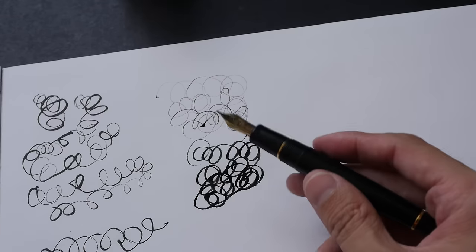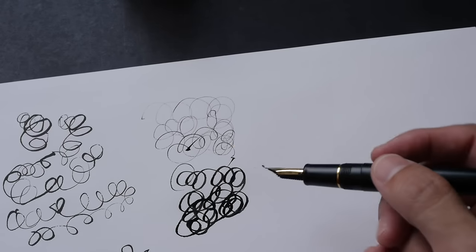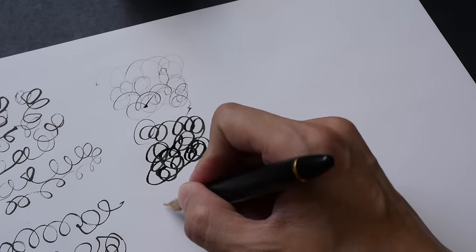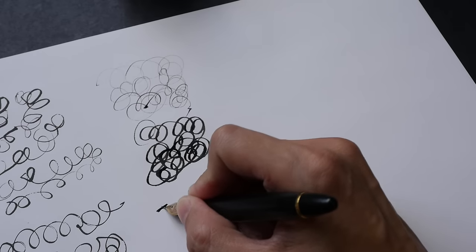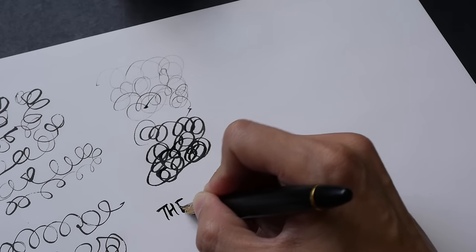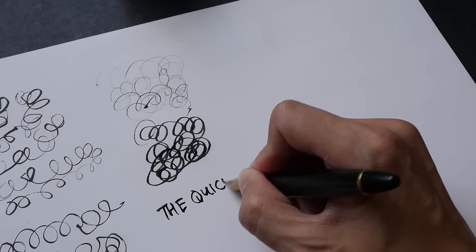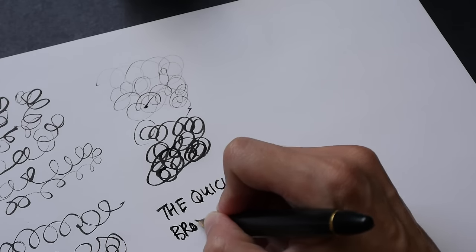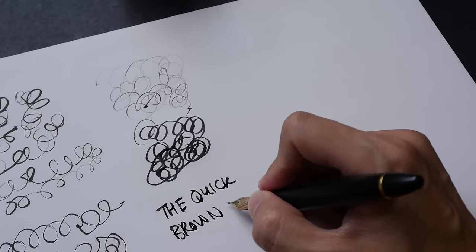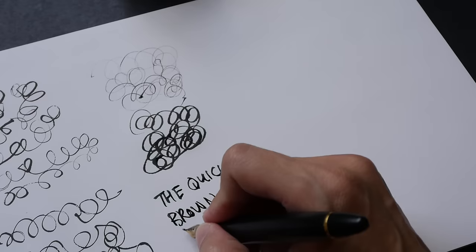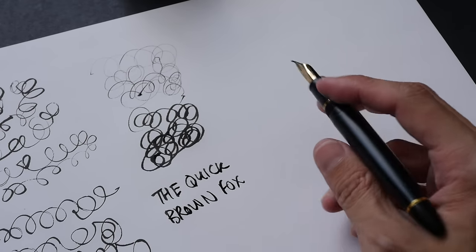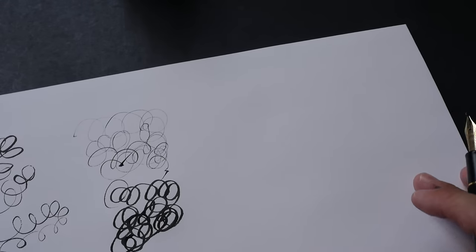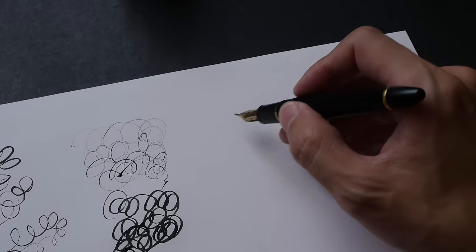And this is something that the music nib cannot do, so that's one of the main differences. As for writing, let's see - I think for writing it's pretty much a standard nib. There are some variation but I don't use this pen for writing, I use this for drawing, so let me do a demonstration on a drawing.